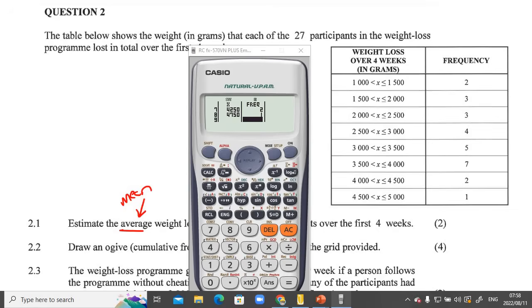So there we go. I've entered in all the values. So we want the average, right? So what we do is we push AC. Then you go shift one, and now we're going to go variance. And now we don't want the standard deviation. We want to go for number two, which is the X with the line at the top. That is another symbol for average or mean. So we press that one, and we say equals, and there we go, 3009.26. If we round to two decimal places, 3009.26.